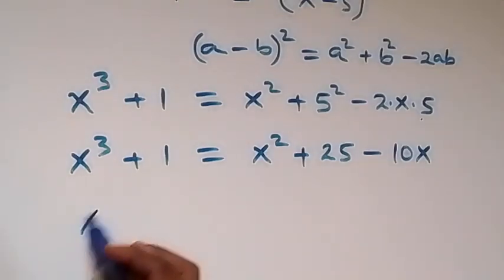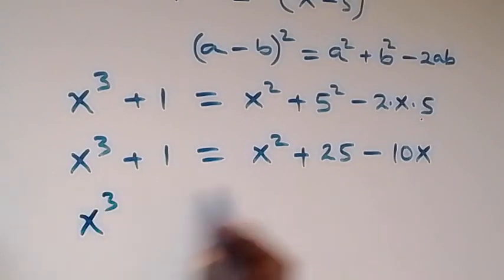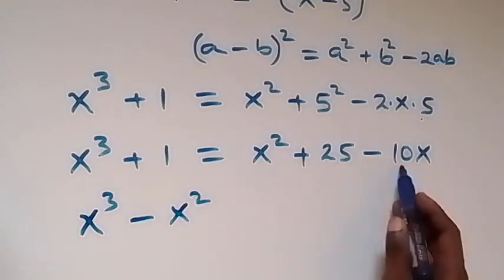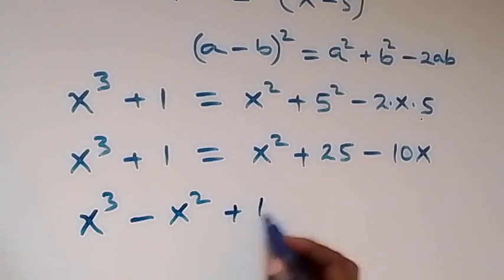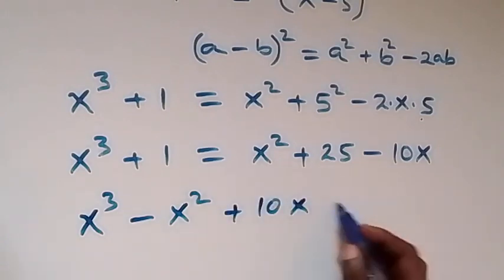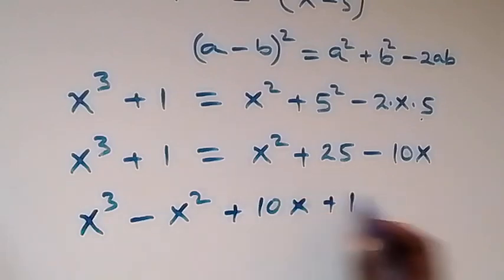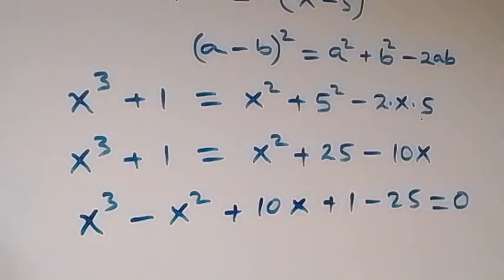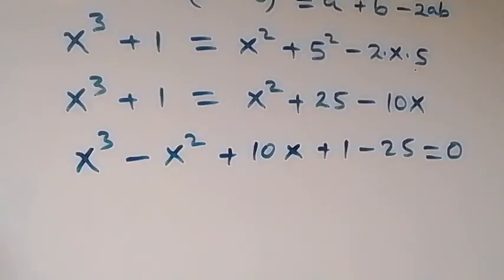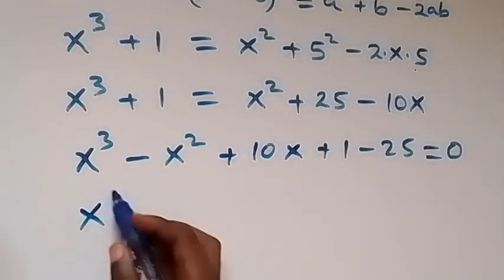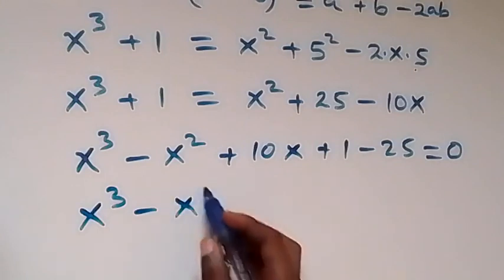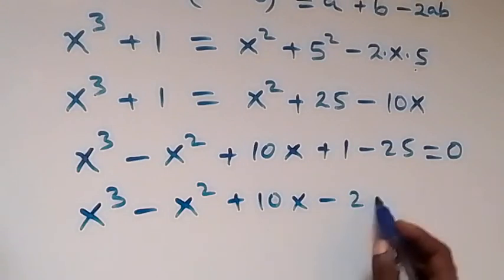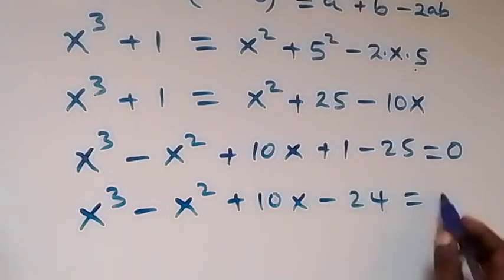Then x raised to power 3, plus x square comes here and becomes minus x square. And minus 10x stays as minus 10x. Plus 1, and plus 25 comes here and becomes minus 25, now equals to 0. Then we have x raised to power 3 minus x square plus 10x minus 24 equals to 0.